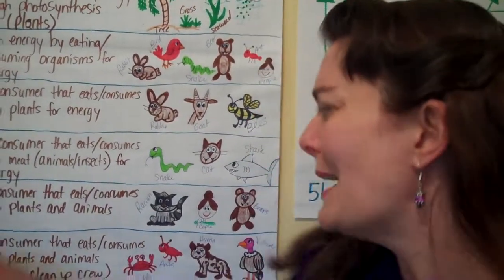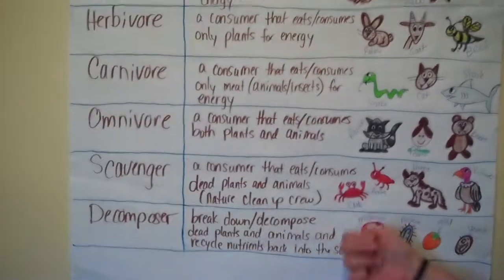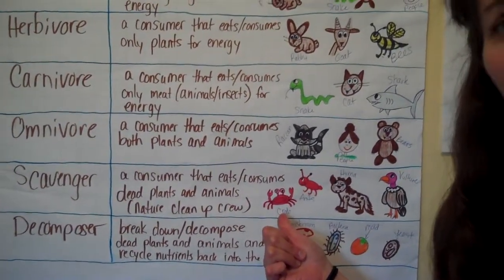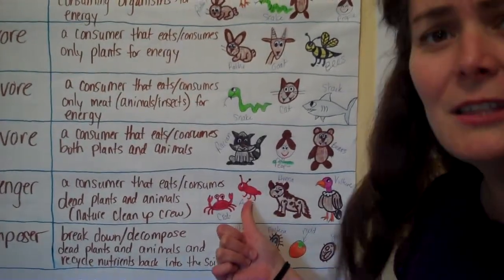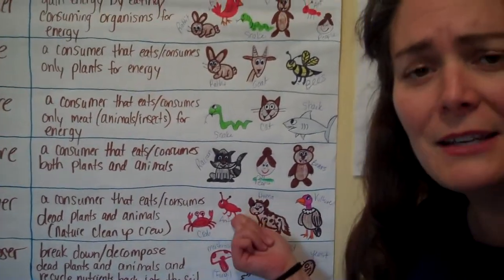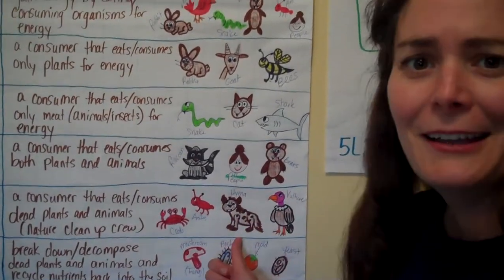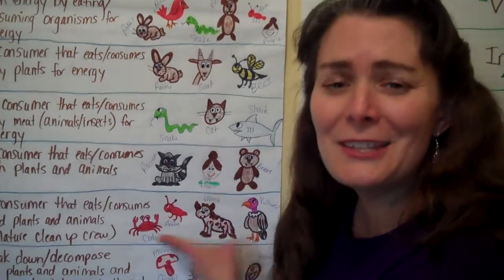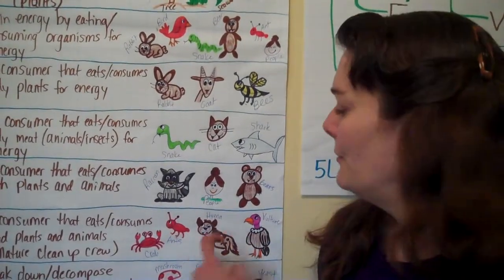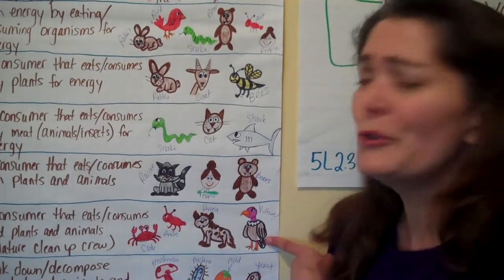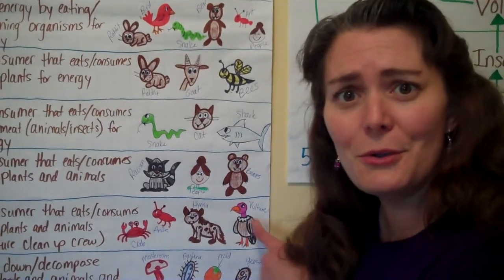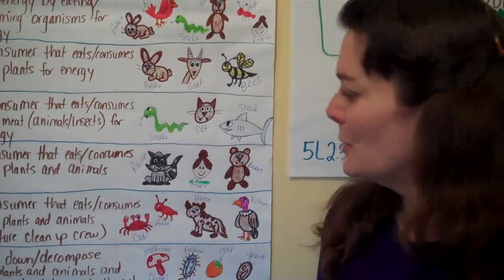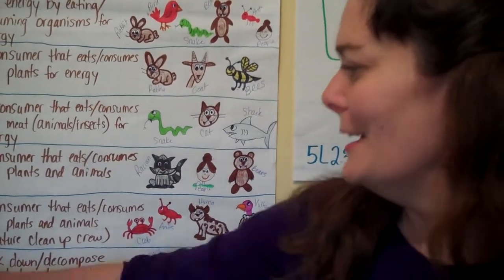Back to scavengers: crabs are the ocean or lake cleanup crew. Ants — we see them taking away dead stuff all the time. Hyenas love to clean up savanna dead stuff; they'll eat whatever they can get their hands on. And vultures — you always see them on the side of the road eating up all the dead roadkill. So thank you, cleanup crew, even though you're a little creepy.